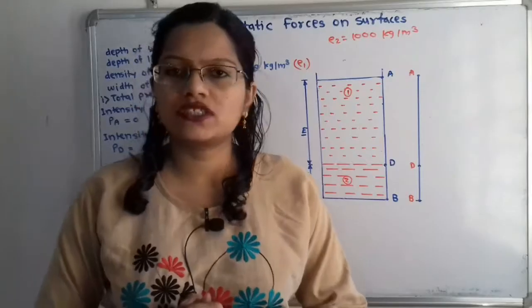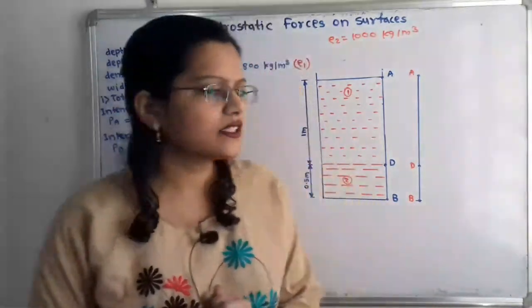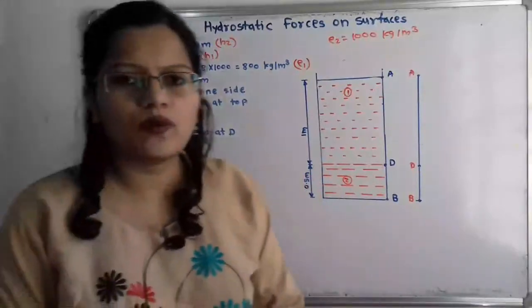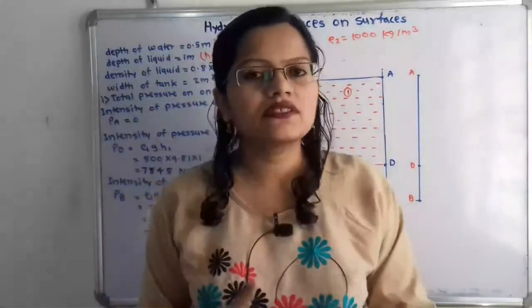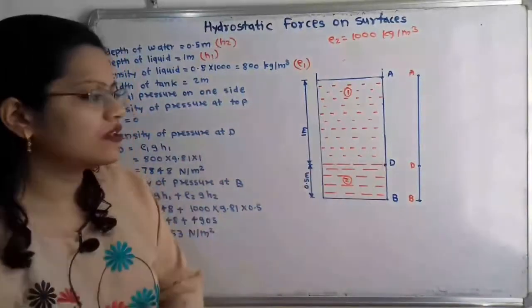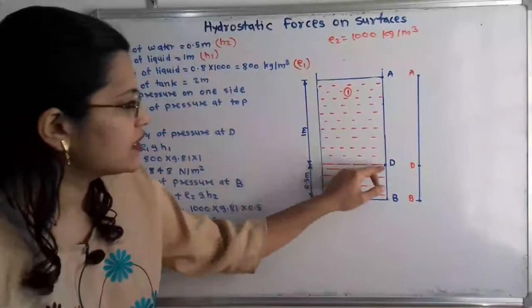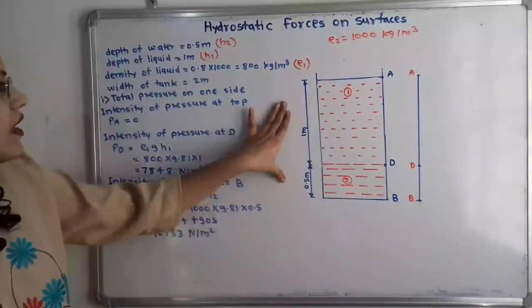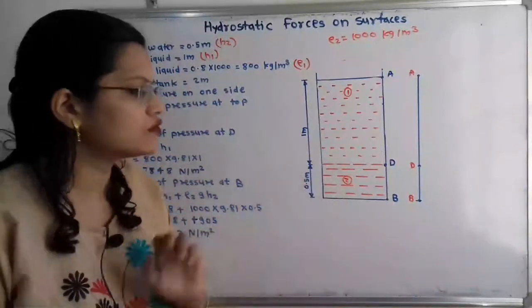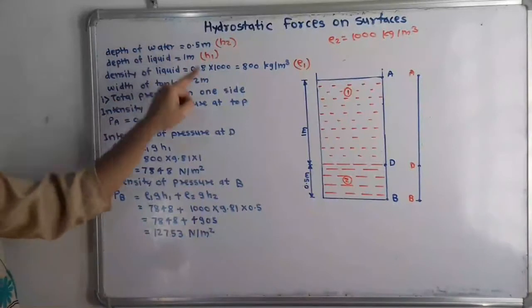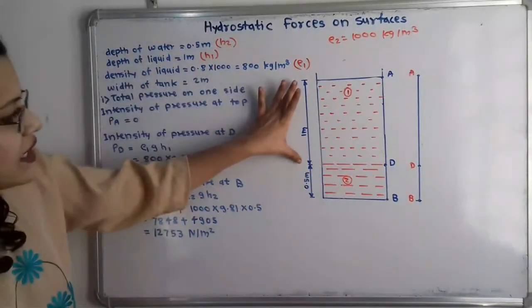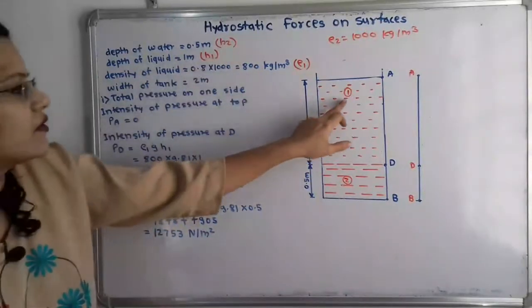First, let us understand the construction diagram as per the given data. The immiscible liquid is present up to a height of 1 meter and water is present up to a height of 0.5 meter. Since these liquids are immiscible, they do not mix and form a distinct layer at point D. We will use suffix 1 for the liquid and suffix 2 for water. The depth of water is h2 = 0.5 meter and the depth of liquid is h1 = 1 meter.